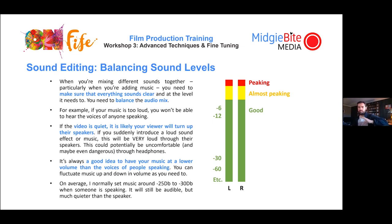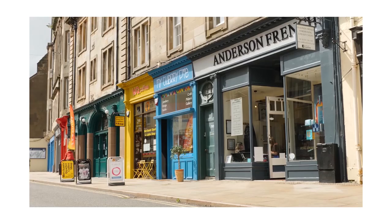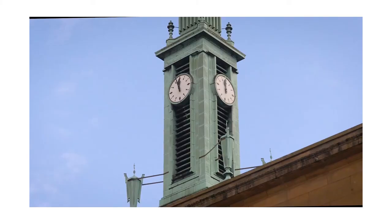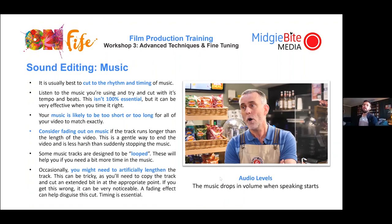Here's an example: music plays, then the volume drops when speech begins so you can clearly hear the voice, then returns. You can still hear the music but it's not overpowering the speech. It's also good to cut to the rhythm and tempo of the music — it's not 100% essential, but consider fading out the music at the end so it doesn't just suddenly stop. You can also artificially lengthen songs by chopping sections and looping them to cover the length of your video.